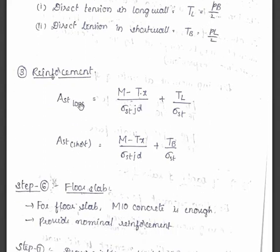Next part is to calculate the reinforcement. This is the formula in order to calculate the reinforcement in long walls: [(M - Tx)/(sigma_st·jd)] + T_L/sigma_st, where x is small h or 1 meter whichever is greater. For short walls we have to consider the entire formula is same as long walls, but here only this thing will change: that is T_B instead of T_L. We are putting T_B here, that's all.